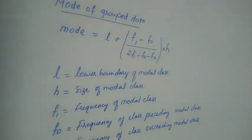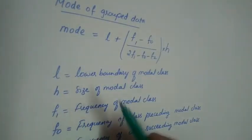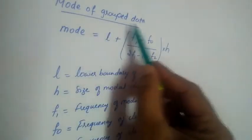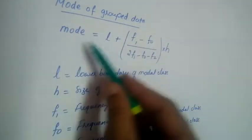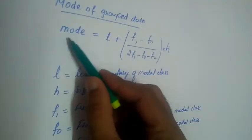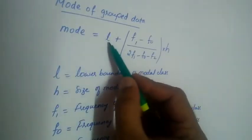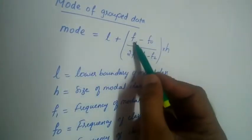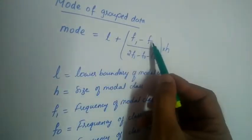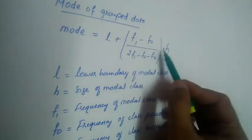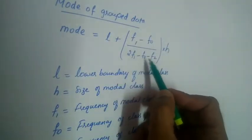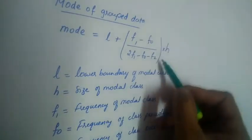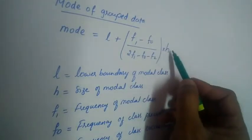Hi students, in this video we will learn about mode of grouped data. The formula for mode is: L plus F1 minus F0, divided by 2F1 minus F0 minus F2, multiplied by H.